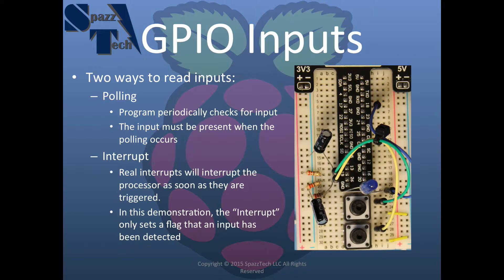An interrupt, on the other hand — a real interrupt in a traditional microprocessor — as soon as the interrupt occurs, the processor stops what it's doing, takes the instructions it's been working on, throws them on the stack, and immediately diverts to a space in memory that stores an interrupt service routine, and it executes those instructions. So whenever that input occurs, it stops right there and goes and executes some predetermined code.